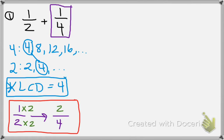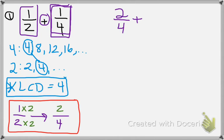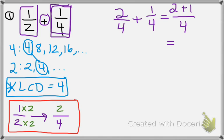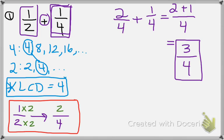So 1 half changed into 2 fourths — that's an equivalent fraction. Do not simplify because you'd just go back to 1 half; we want both denominators to be the same. Now let's rewrite the problem: 1 half got replaced by 2 fourths, so we write 2 fourths plus 1 fourth. They have the same denominator, so we keep it. Now we just add the numerators: 2 plus 1 is 3 over 4. Can we simplify? No. Our answer is 3 fourths.